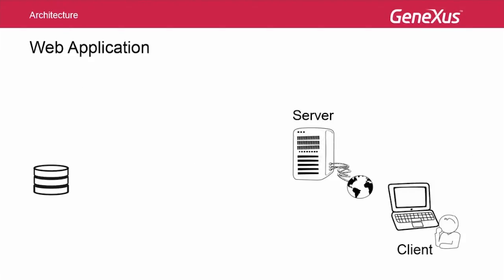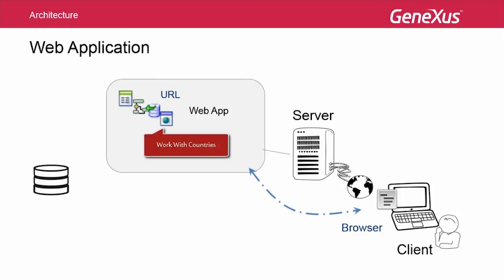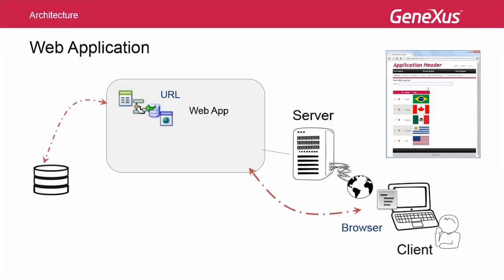To think of the underlying architecture of GeneXus' smart device solutions, we should start with what we are already familiar with: web applications. On one hand, we have a server, and on the other, a client. In the server, we have the web application, and in the client, we have a browser. We execute the web application from a URL that executes, for example, the work with countries. This object queries the database and returns the data to the client, for the browser to set up the layout that will be presented to the user as HTML, in response to the request made.